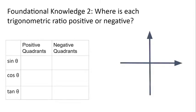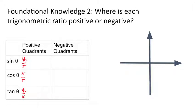Here's our second bit of foundational knowledge, and this part is important. Where is each trigonometric ratio positive or negative? For sine, remember, sine is defined as y over r; cosine is defined as x over r; and tangent is defined as y over x. Let's store that in our memory banks as we look over here.